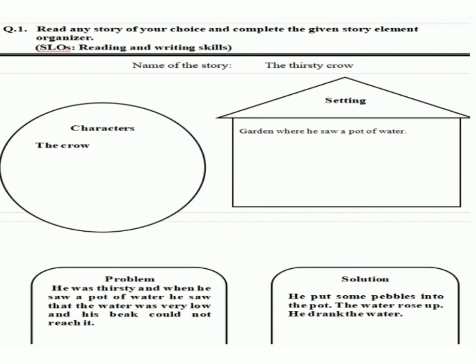Now, by keeping this story in mind, we will try to solve this question one by one. The first element is character. As we discussed, characters are the elements that perform an action. In my story, the crow is the performer of the action, so we will write 'crow' in the element character. Our next element is setting. Setting is about the place where the whole action took place. In this story, the garden is the place where he saw a pot of water.